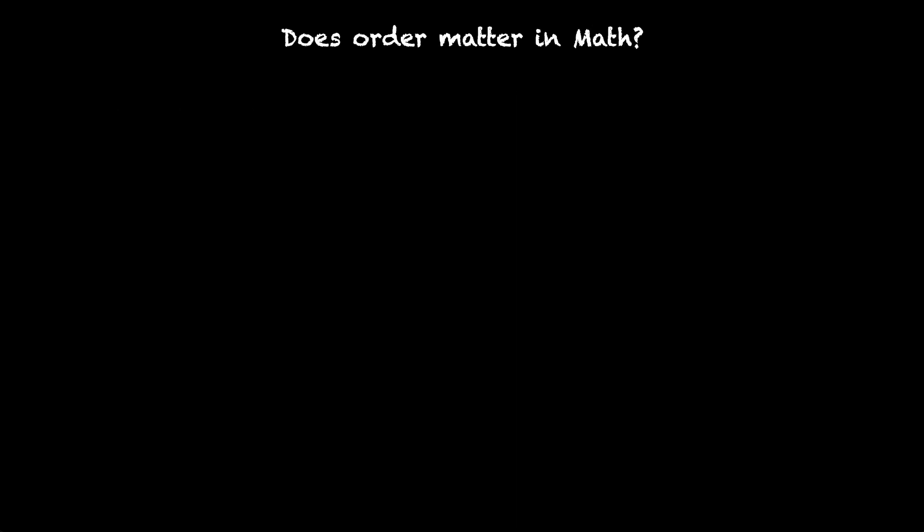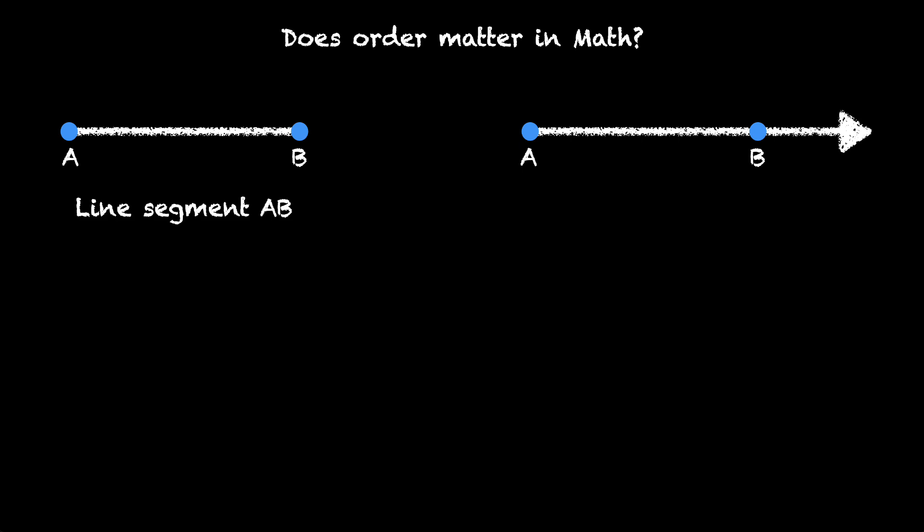But does order matter in math? Here are two points A and B. If we join them, we get a line segment. But we can also pass a ray starting from A and then passing through B, moving in that direction. In the first case, we have line segment AB. We can also say this is line segment BA.